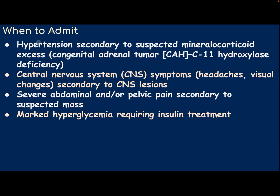Indications for admission include hypertension secondary to suspected mineralocorticoid axis abnormality, congenital adrenal hyperplasia or tumor (CAH with 11-hydroxylase deficiency), CNS symptoms such as headache or visual changes secondary to a CNS lesion, severe abdominal and/or pelvic pain secondary to a suspected mass, and marked hyperglycemia requiring insulin treatment.